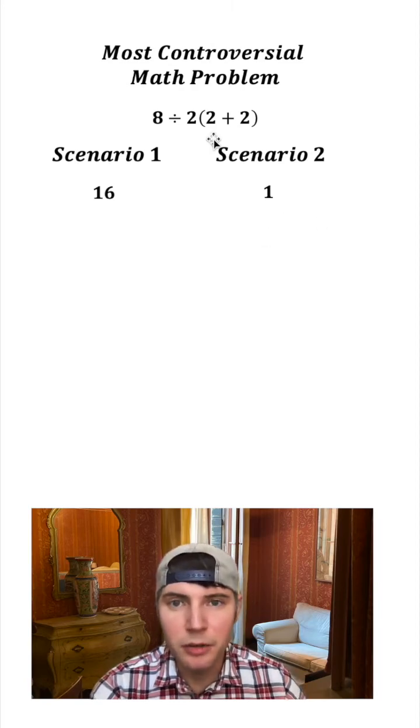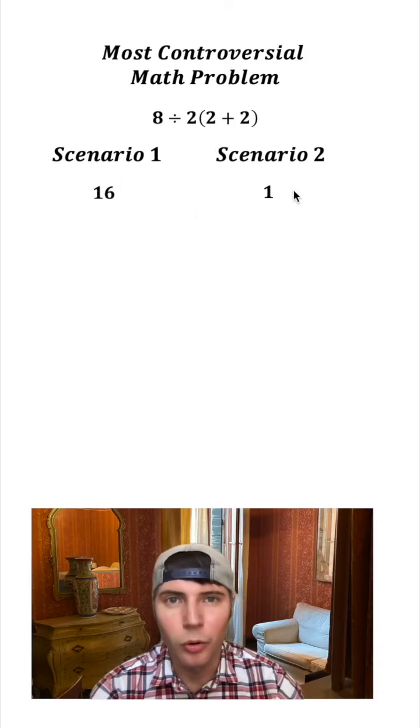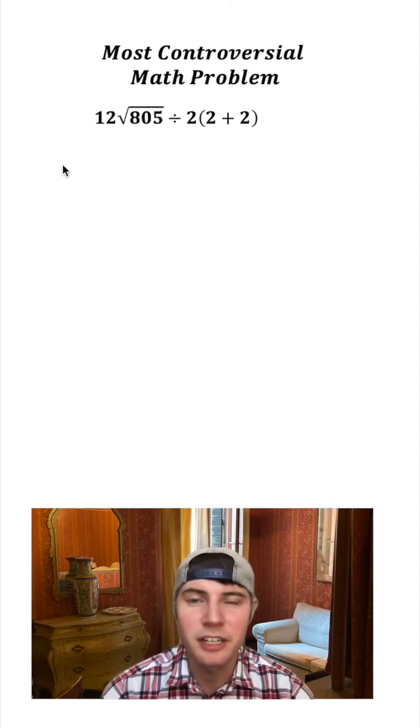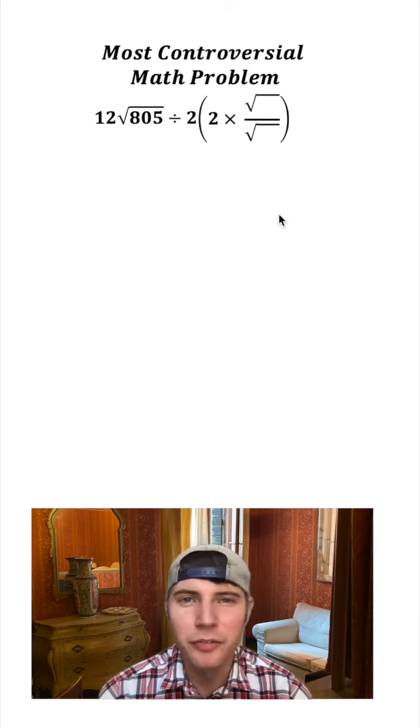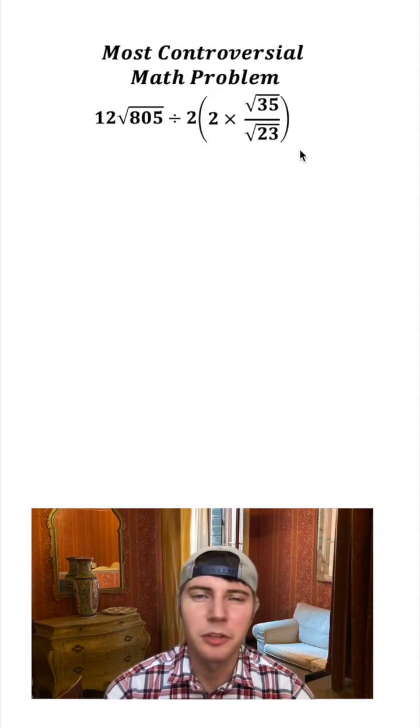This is controversial because it's ambiguous. We do not know whether it is 16 or 1. But we can make something way more controversial. Let's take our 8 divided by 2 plus 2. Let's change the 8 into something more interesting like 12 root 805, and let's make this plus a times. Let's make this 2 more interesting, a fraction of roots, and let's put 35 on top and 23 on bottom.